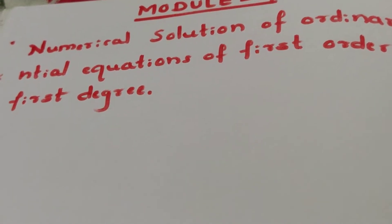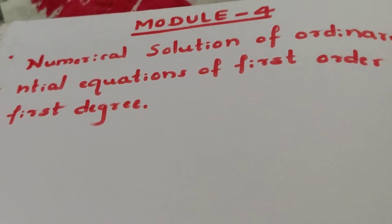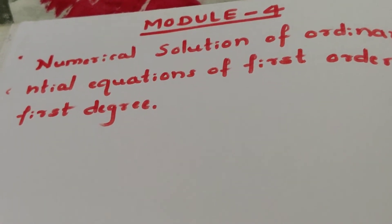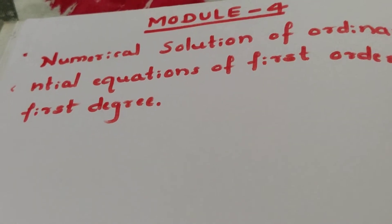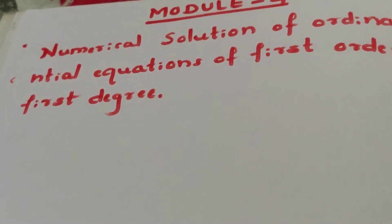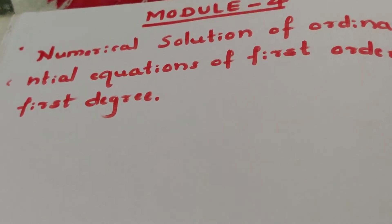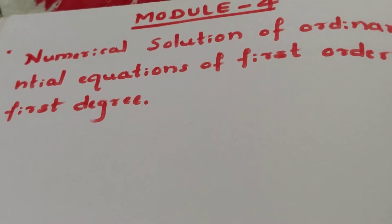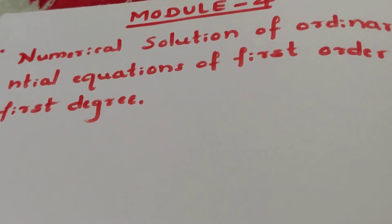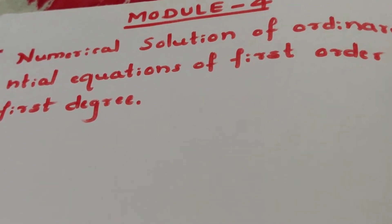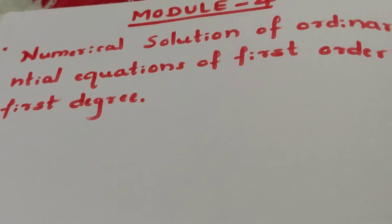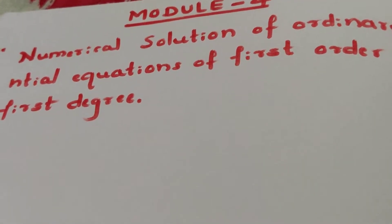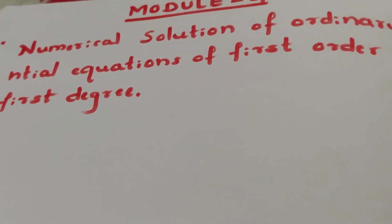Using computers we can also find numerical solutions for differential equations that arise from physical problems. We can get a high degree of accuracy — for example, if the exact solution is 1, using numerical methods we may get 0.999. That is the highest accuracy we can achieve.